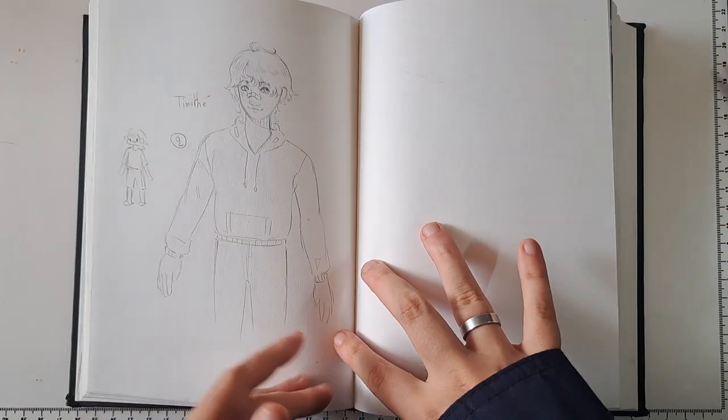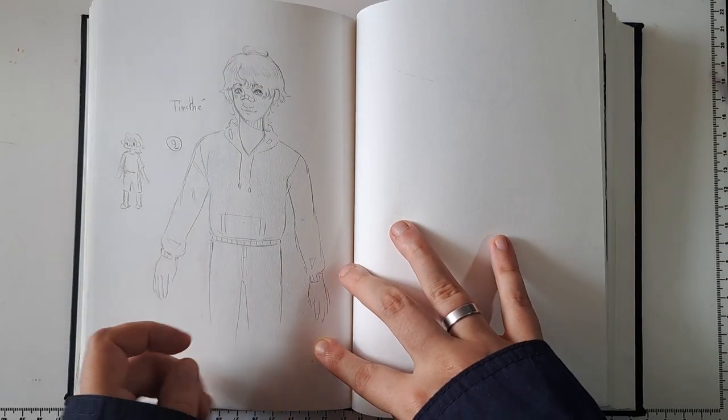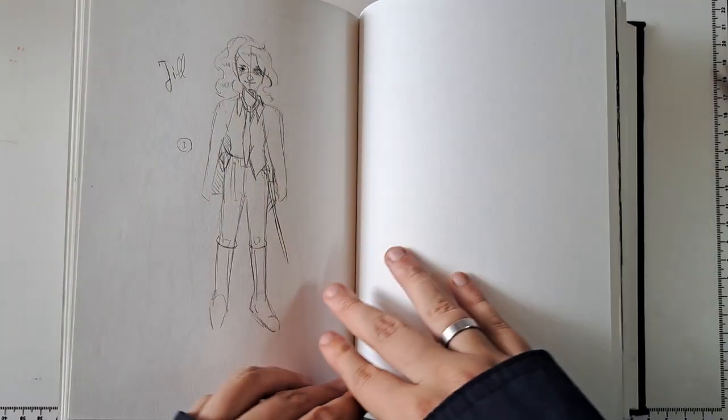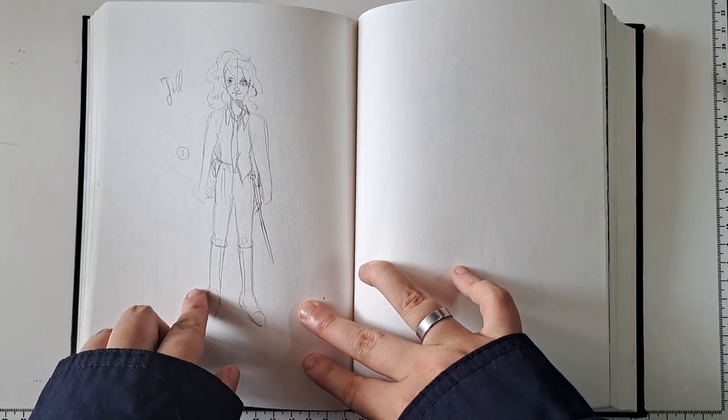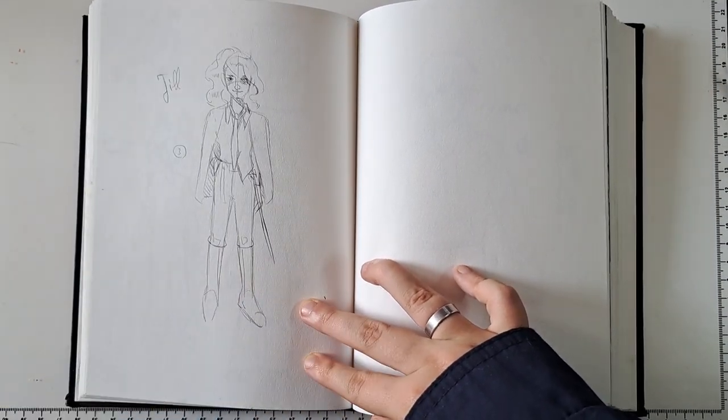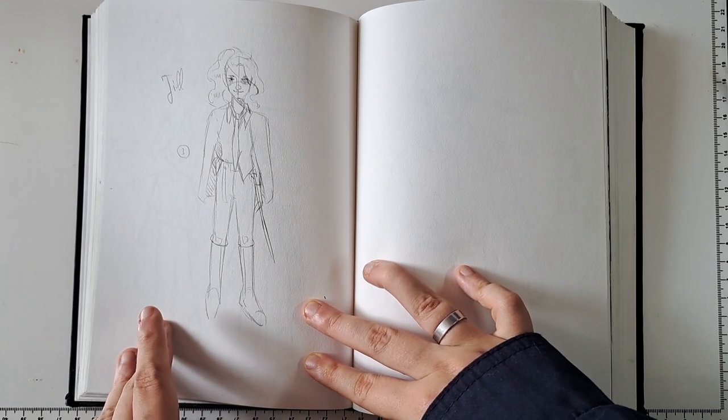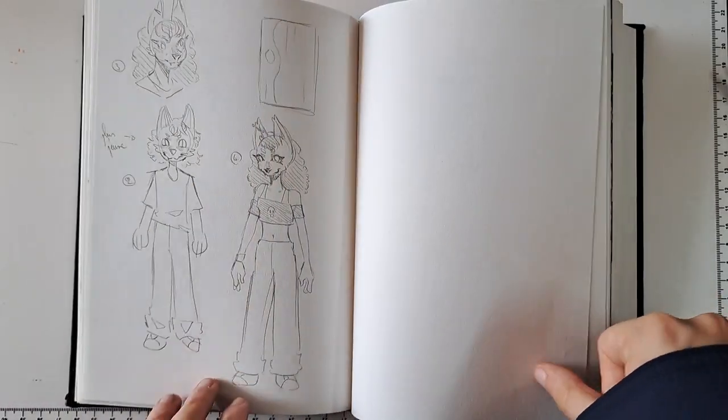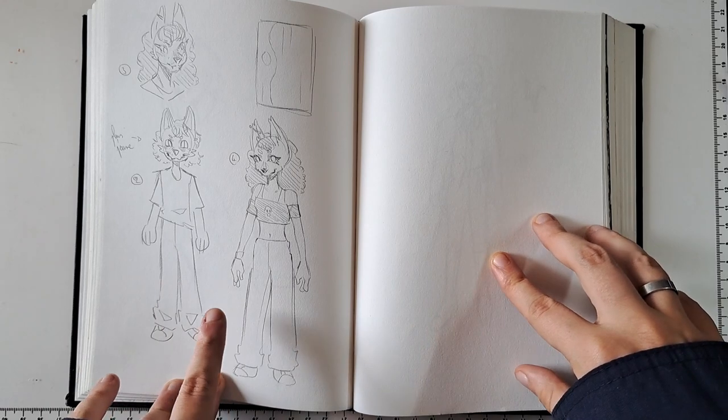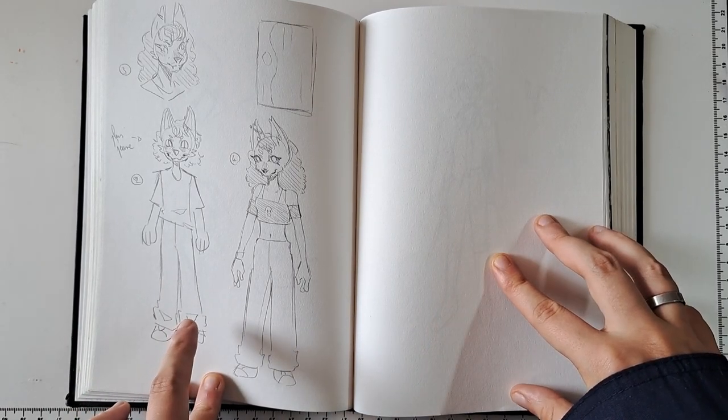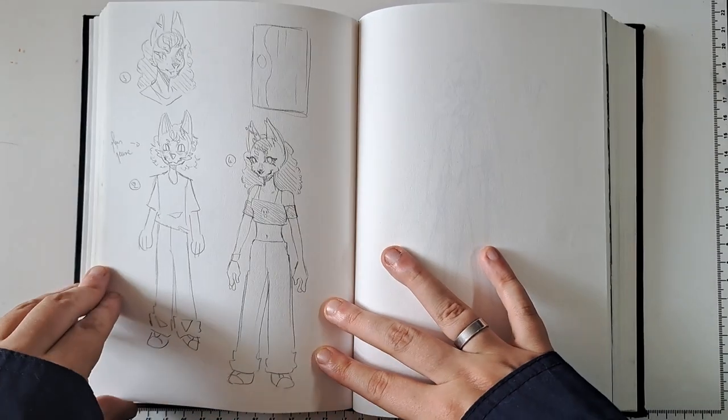I tried to do a turnaround. The second character was Timothée, a very basic character. The third one was Jill. I don't know why, but she looks like a human version of Undyne. These are other designs of Liam.